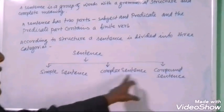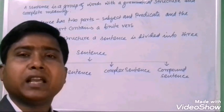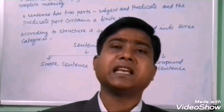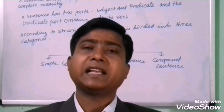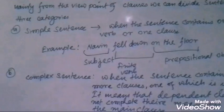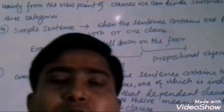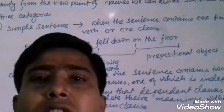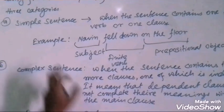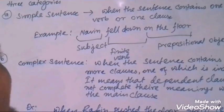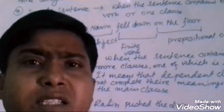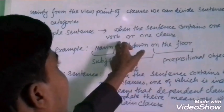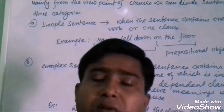Simple Sentence, Complex Sentence, and Compound Sentence. Today we shall know what is meant by Simple Sentence, Complex Sentence, and Compound Sentence along with their examples. From the viewpoint of clauses, a sentence has been divided into three categories: Simple Sentence, Complex Sentence, and Compound Sentence. Simple Sentence means when the sentence contains one finite part or one clause, it is called a Simple Sentence.